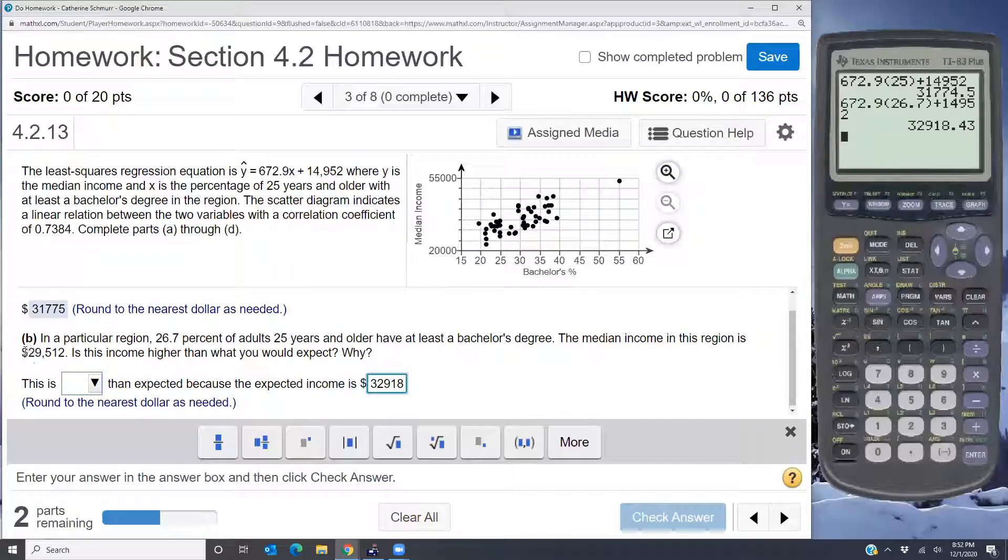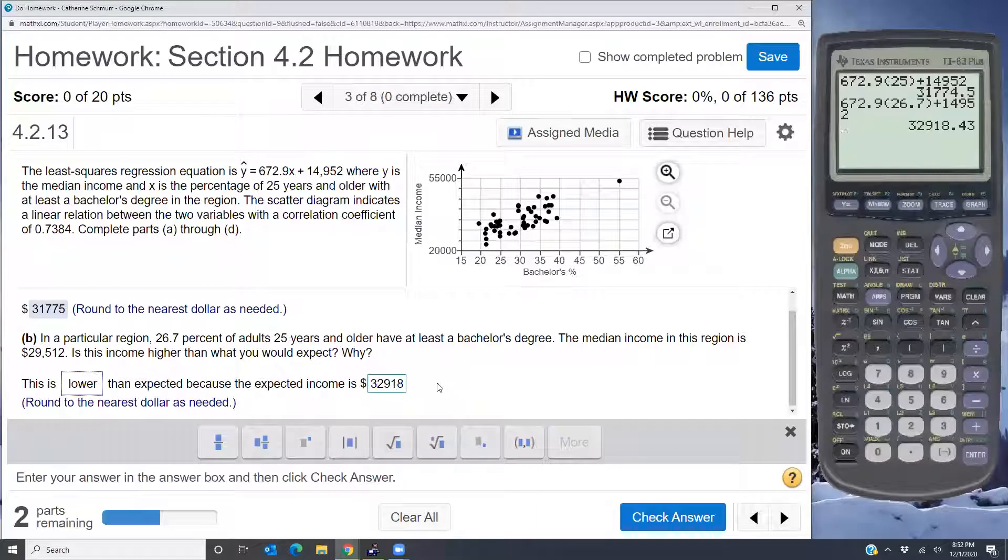Now what I look at is the number that they've actually observed. So 29,512, that's below what the equation gives us. So we would say this is lower than expected because the expected income came from that equation and it was 32,918.